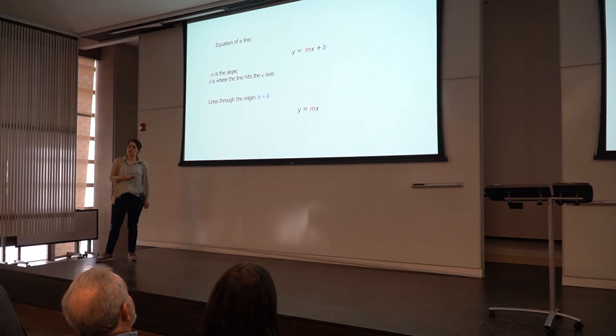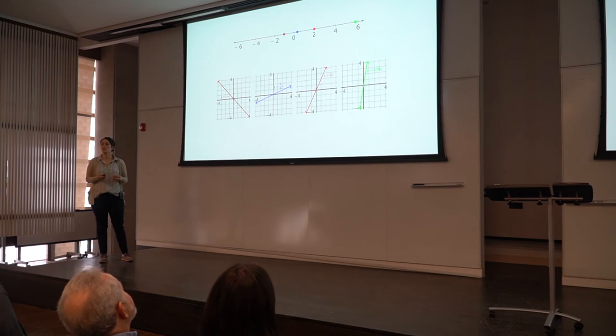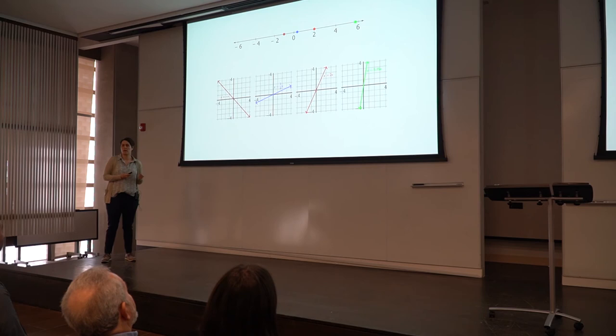And these lines are just determined by their slope, some number m. And so actually, if I think about the number line, then I see that every point in the number line exactly corresponds to one of these lines through the origin, where I just take the line with that slope. So I have almost captured all of the lines through the origin in the plane just by looking at the number line.